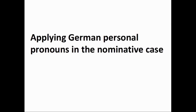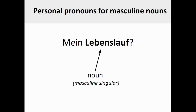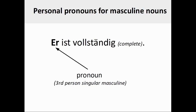Let's now take a look at how we could apply German personal pronouns in the nominative case. The explanations that follow will help you to complete the related online course activity. The grammatical gender of the German noun Lebenslauf, or resume, is masculine and the number of the noun is singular. If you were to see the definite article of the noun here, it would be der. Since Lebenslauf is a masculine singular noun, the matching personal pronoun needs to be used: er (masculine, third person singular).